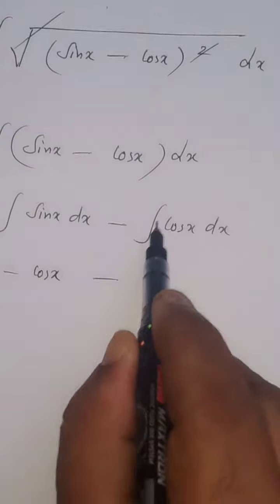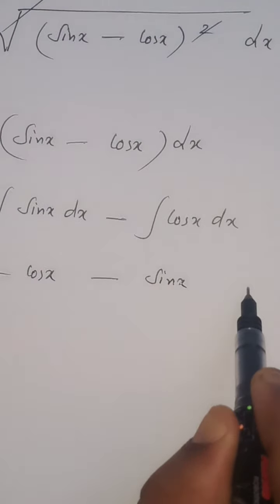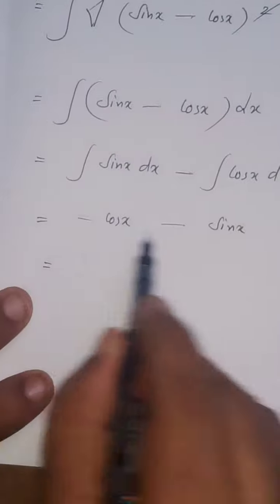Integral sin x dx is minus cos x. Minus cos x integration is plus sin x. Integration is over, introduce the constant c.